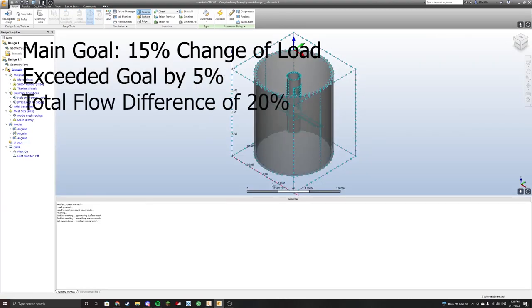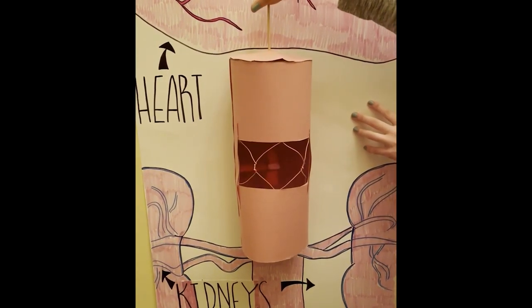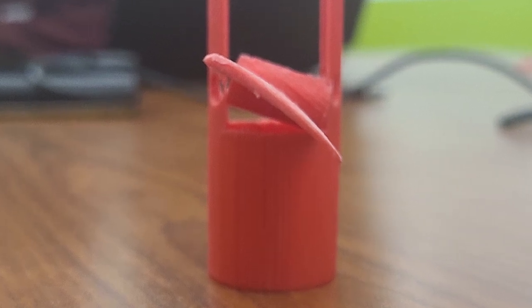This is a 15 times scale 3D printed model of our prototype. As you can see, this is our implementation of variable pitch.